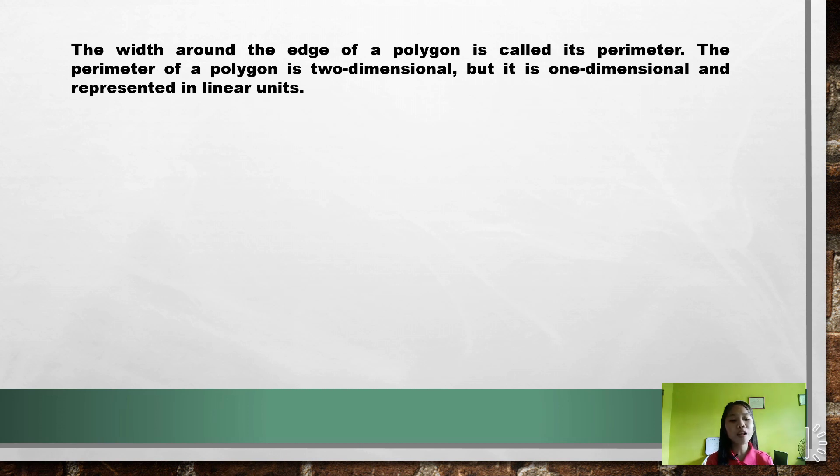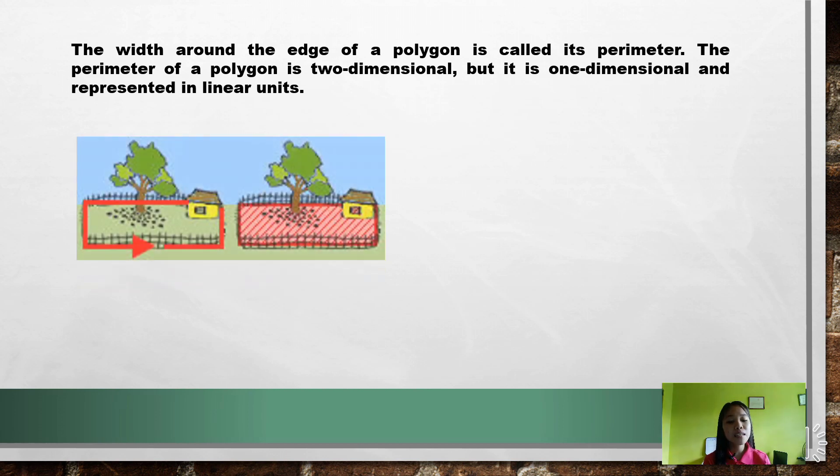The width around the edge of a polygon is called the perimeter. The perimeter of a polygon is two-dimensional, but it is one-dimensional and represents linear units.